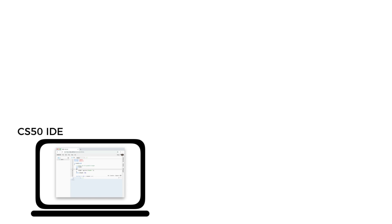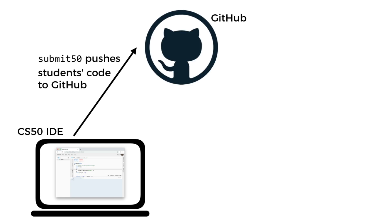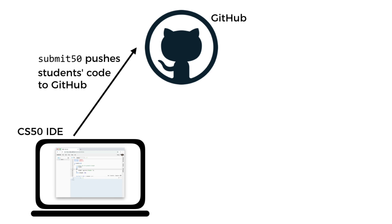How does this all actually work? When a student is running CS50 IDE, or even on their own computer, and they run Submit50, the result is that Submit50 pushes the student's code to GitHub. After that, GitHub will inform submit.cs50.io of the new push, and submit.cs50.io will start running the automated correctness and style testing. You'll then be able to log in to submit.cs50.io, click on your course, view all submissions for your students, and download their code and the results of the automated testing.